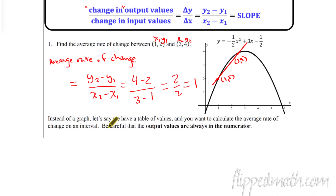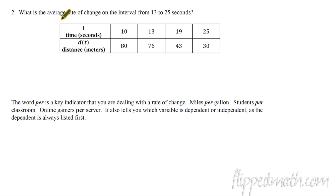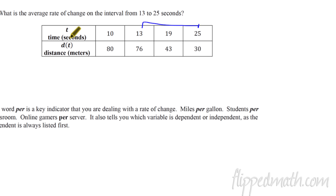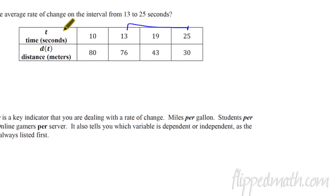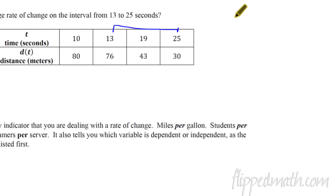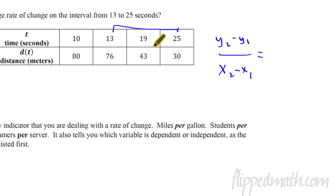Instead of a graph, let's say we have a table of values and want to calculate the average rate of change on an interval. Be careful — the output values, the y-values, always have to be in the numerator on top. Number two asks: what is the average rate of change on the interval from 13 to 25? We have time and distance. Time is our independent variable, so it goes on the bottom.